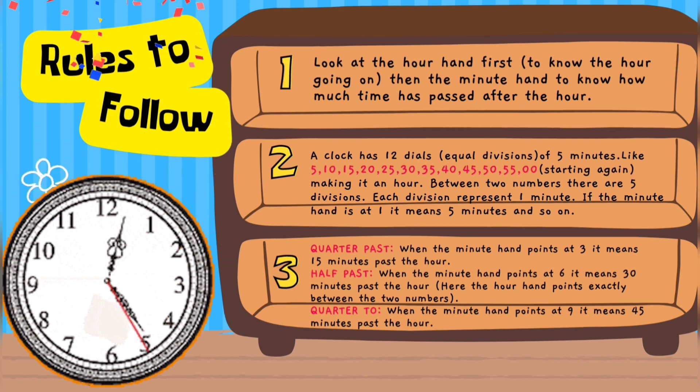Between the two numbers, there are five divisions. Each division represents one minute. If the minute hand is at 1, it means 5 minutes and so on.